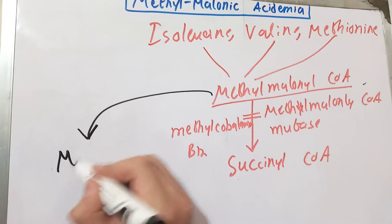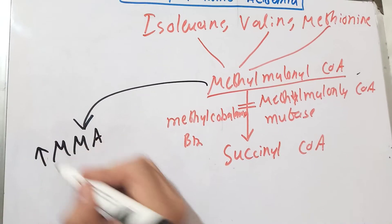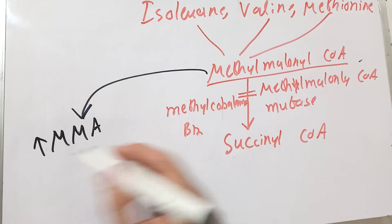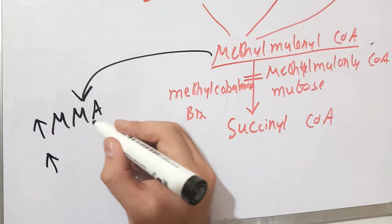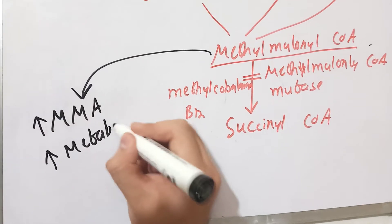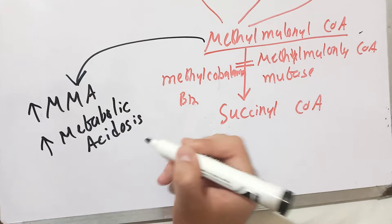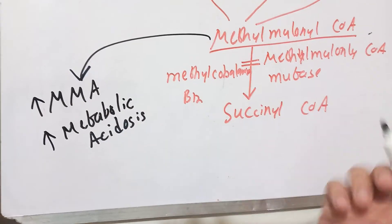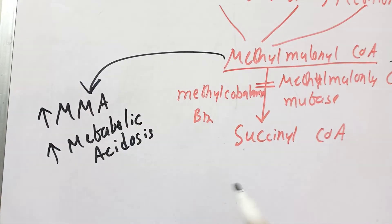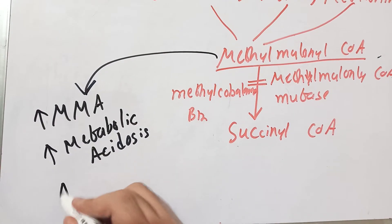The body tissues will have a great concentration of methylmalonic acid, which can be measured in urine. The second manifestation is that methylmalonic acid will cause metabolic acidosis, because methylmalonic acid is an acidic compound.